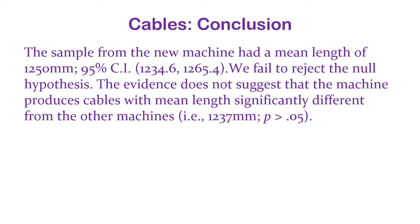P is greater than 0.05 because alpha was 0.05 — the confidence interval was 0.95, two-tailed.